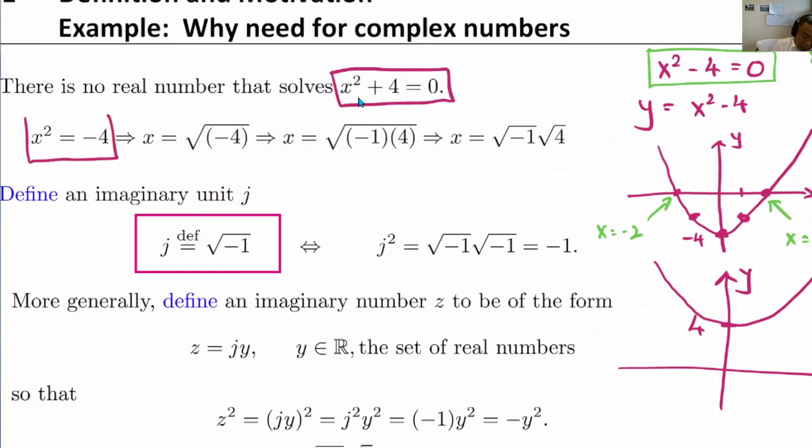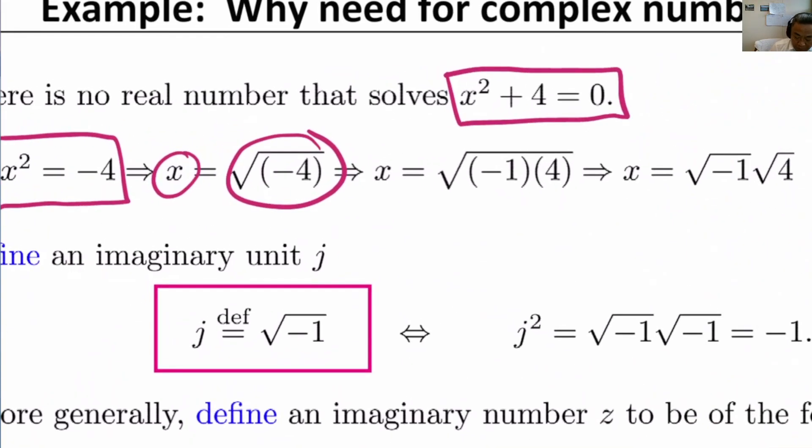Basically, when we try to solve x squared plus 4 equals 0, we move the 4 to the right-hand side, so it's x squared equals minus 4. And now when we take the square root on the left and right-hand side, we've got x equals square root of minus 4, and we didn't know or we do not know how to solve this. Well, let's progress.